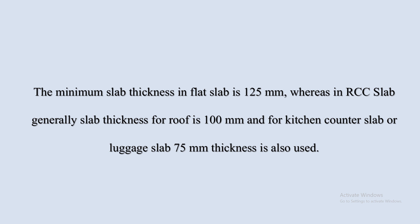The minimum thickness of flat slab as per IS code IS 456 is 125 mm, whereas in RCC slab we take various thicknesses. This is a major difference between flat slab and normal RCC slab.